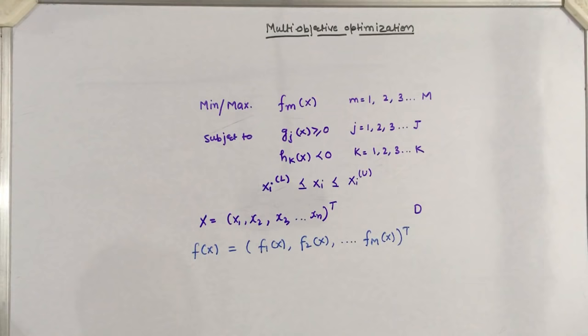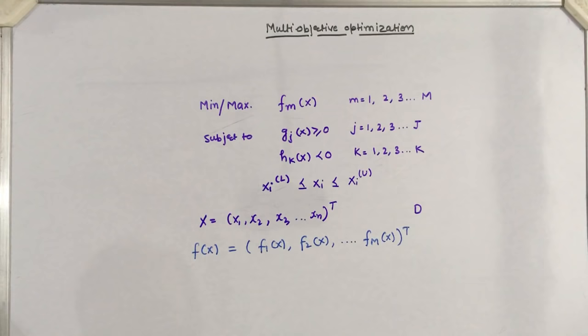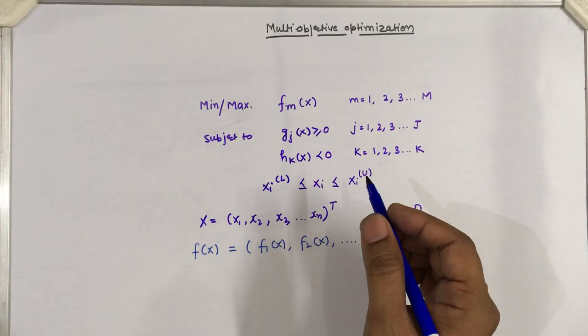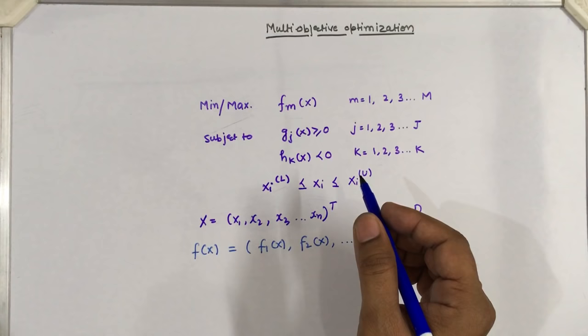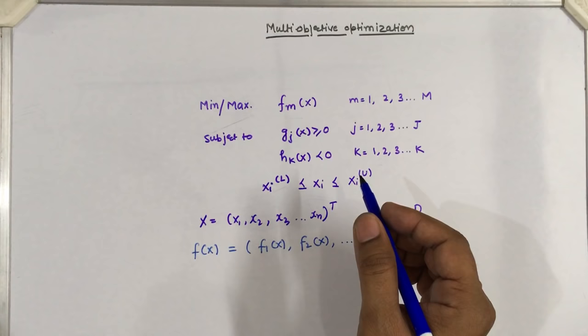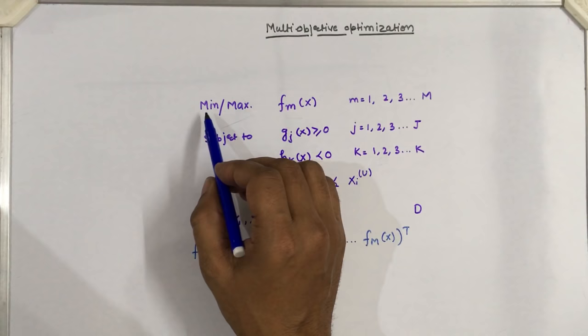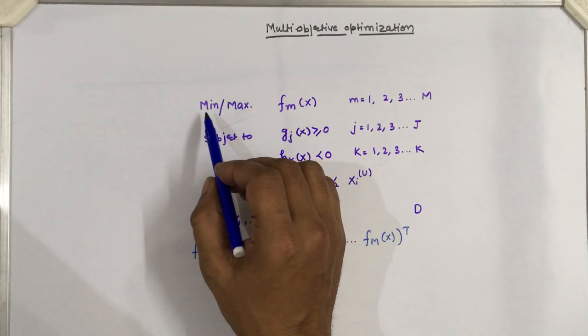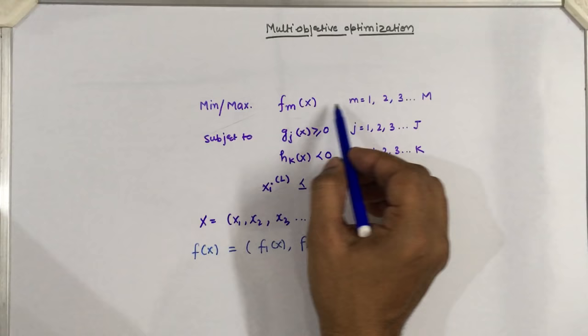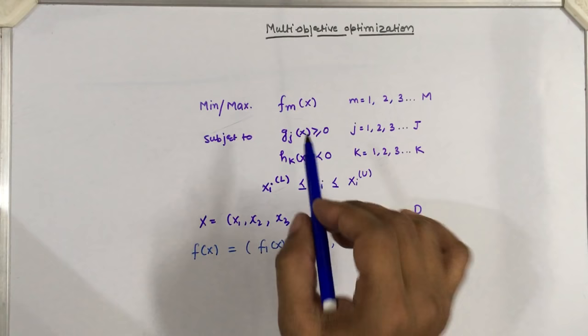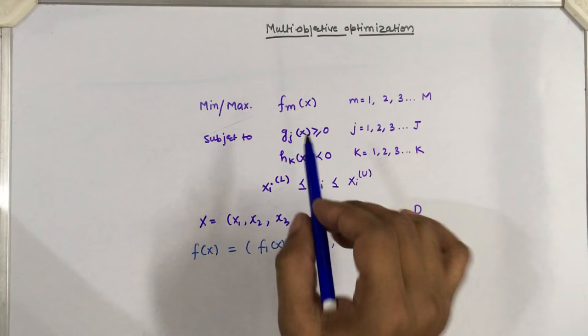If we want to mathematically model the multi-objective optimization concept, a multi-objective optimization problem has multiple objectives — as the name suggests — each of which is either minimized or maximized. We can define a function as: minimize or maximize f_m(x), where m is the objective index going from 1 to capital M, subject to some constraint functions representing trade-offs.